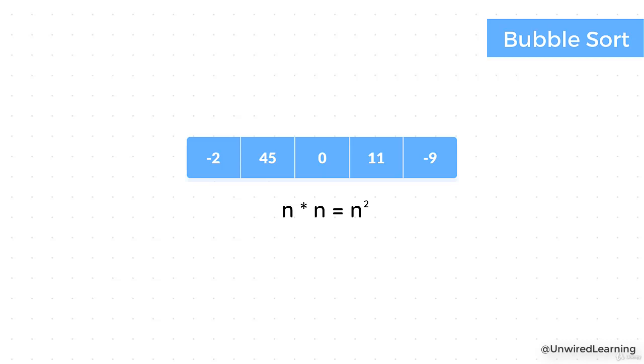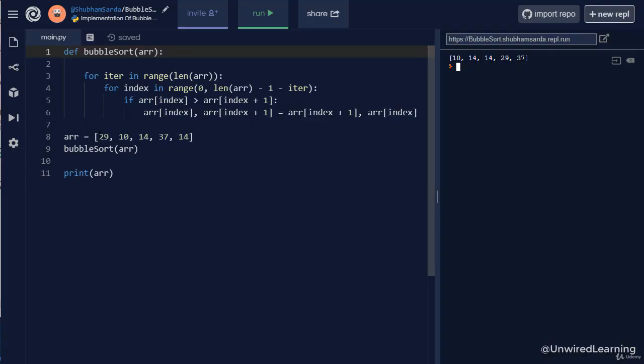So there are three cases: best case, average, and worst. Let me discuss more about this in a few minutes. Currently, if I talk about the complexity of bubble sort, it's n square. Why? Because we have n number of inputs and we are iterating n number of times, so it's as simple as that.